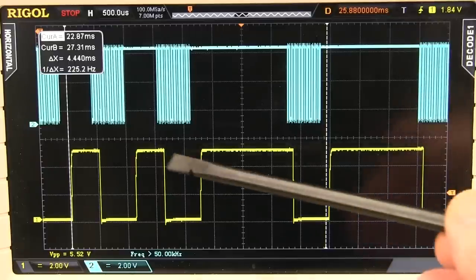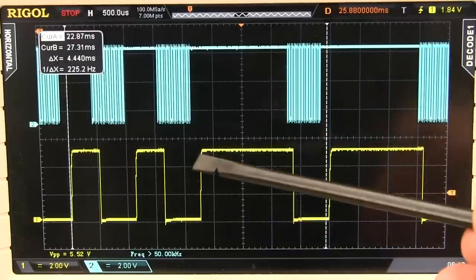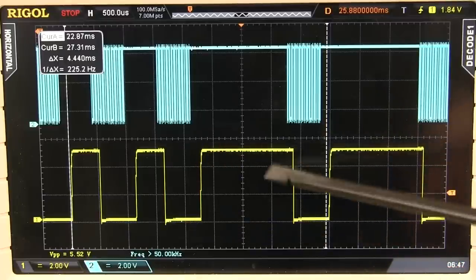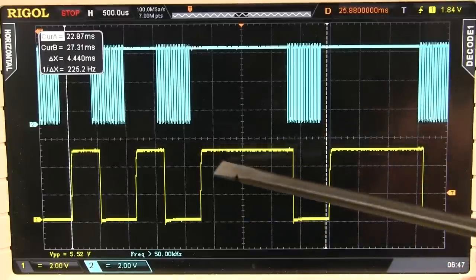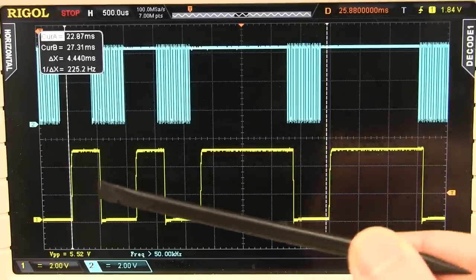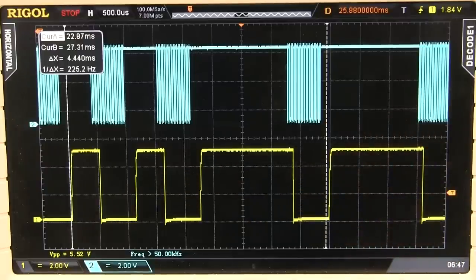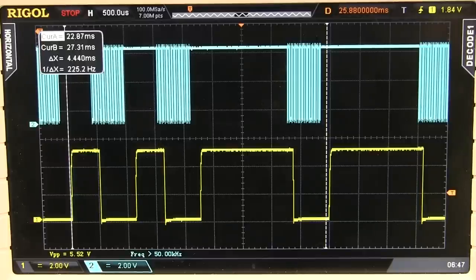But a one is represented by it going low like that for that one time period, and then going high again for three time periods like that. So that in there, so that from there to there is a zero, and from there to there is a one. So it's quite unusual, but that's the NEC protocol.